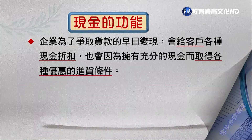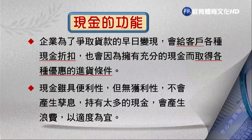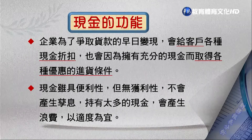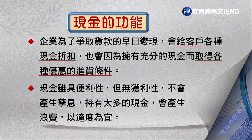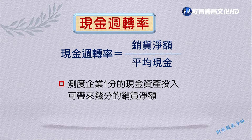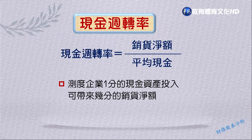接著介紹現金周轉率。現金周轉率用來衡量企業的現金與銷貨之間的關係。企業為爭取銷貨貨款的早日變現，通常會給客戶各種現金折扣，也因擁有充分現金而可取得優惠的進貨條件。現金雖具有便利性，但缺點是本身沒有獲利性，所以企業若持有太多現金其實是一種浪費。現金周轉率的公式是：銷貨金額除以平均現金金額，以適度為宜。